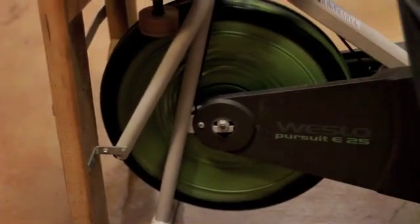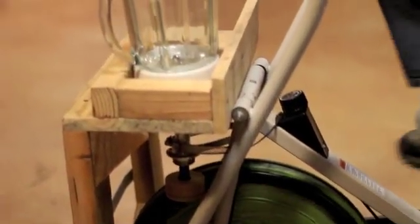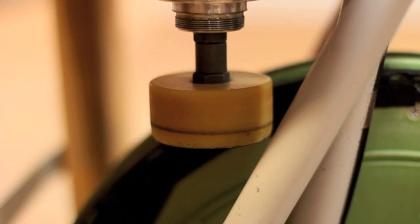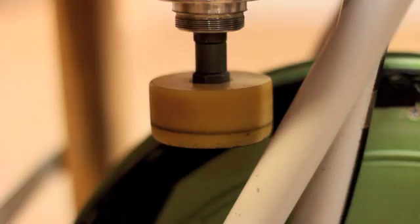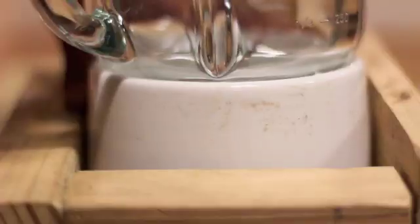Pedaling the bicycle causes a flywheel to rotate. A friction drive connects to the flywheel and transfers the rotational energy of the flywheel to the blender, causing it to spin. The friction drive is made of a skateboard wheel, a bicycle hub, and a blender coupling.